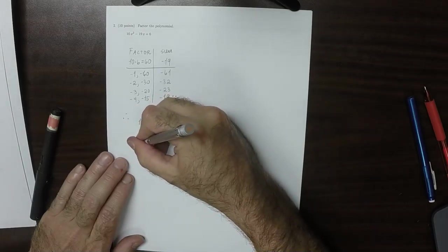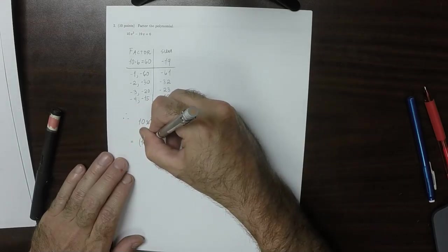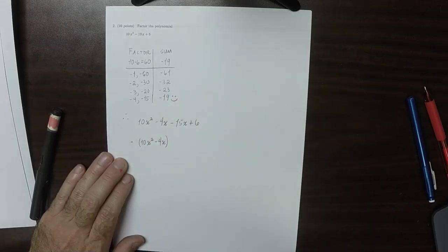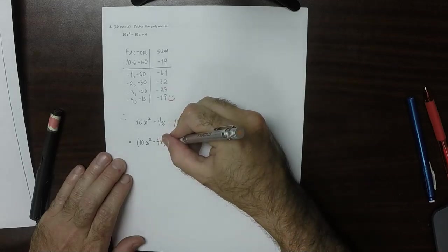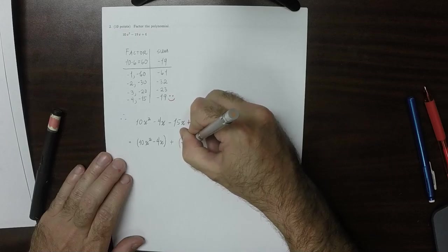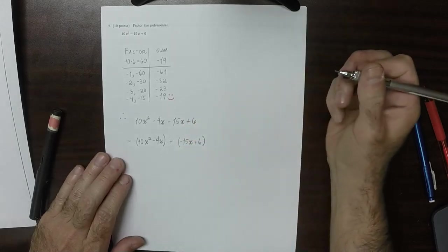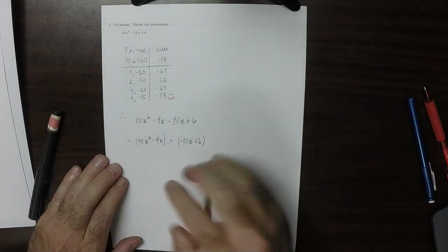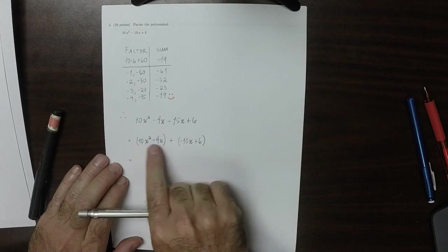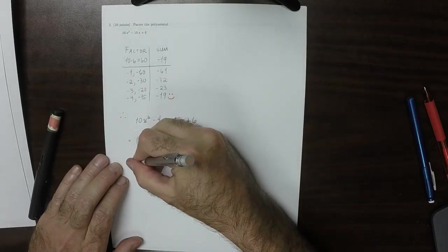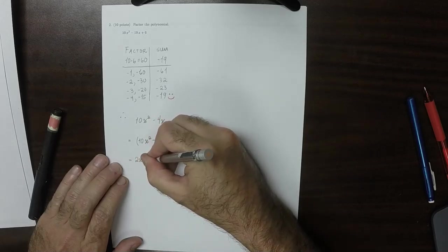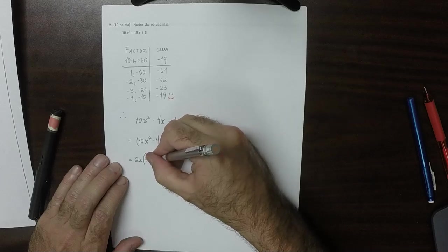So now we'll form groups. So 10x squared minus 4x in a group. And then plus negative 15x plus 6 in a group. And out of each group, we'll factor the greatest common factor. So a 2 can come out because those are both even, and an x can come out, so 2x can come out. And if you do that, this would be 5x, and then minus 2.